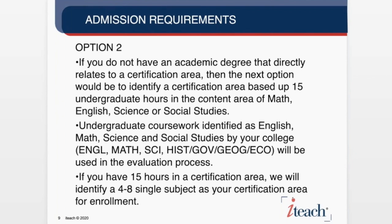Option two: for individuals who do not have an academic degree, we look for 15 hours in English to identify 4 through 8 English, 15 hours in math, science, or social studies — which comprises history, government, geography, and economics — to identify a 4 through 8 specific certification area. That might be 4 through 8 English Language Arts and Reading, 4 through 8 math, or 4 through 8 science. If you lack a degree but have 15 hours, that's a great foundation for those middle school grades.